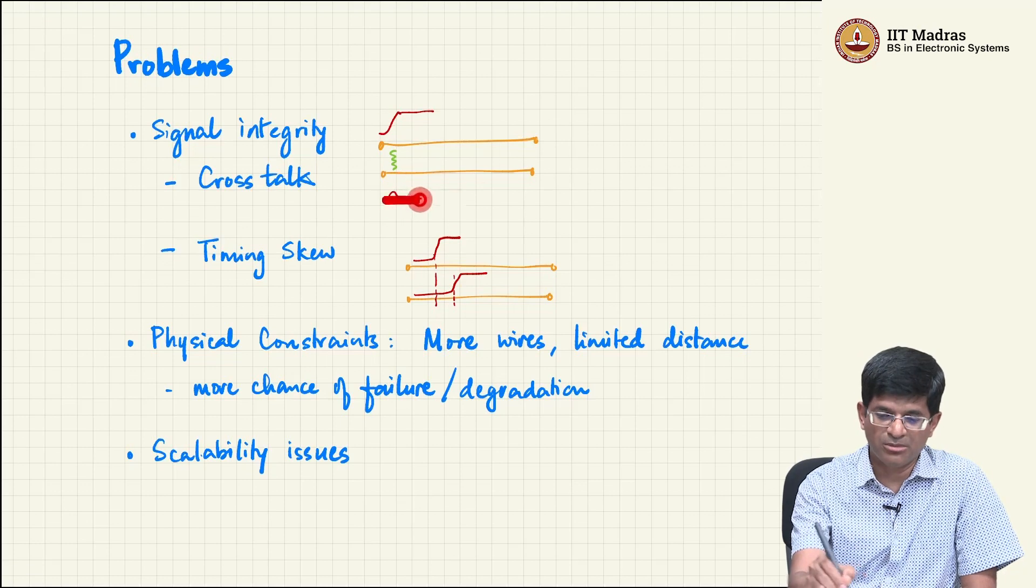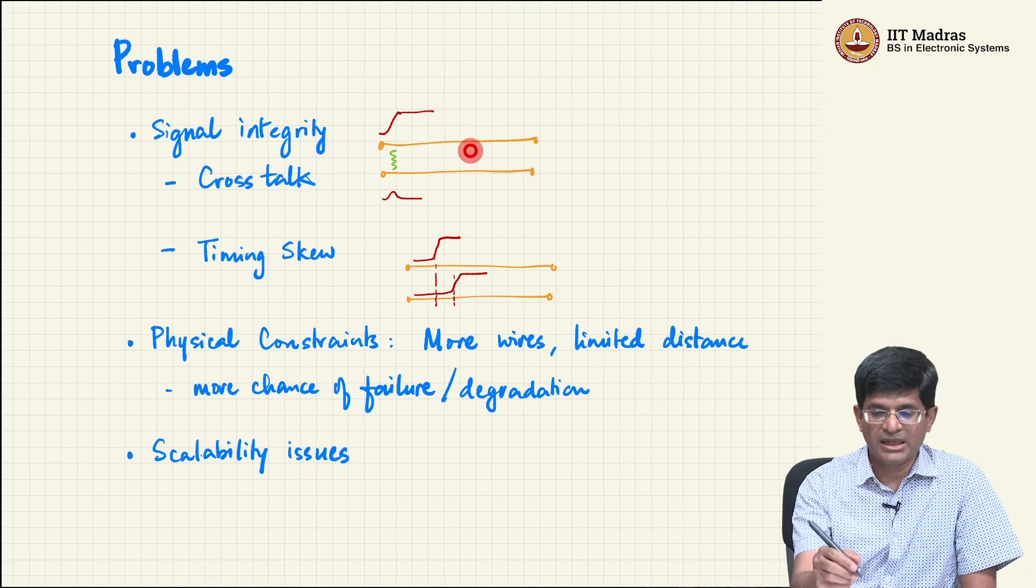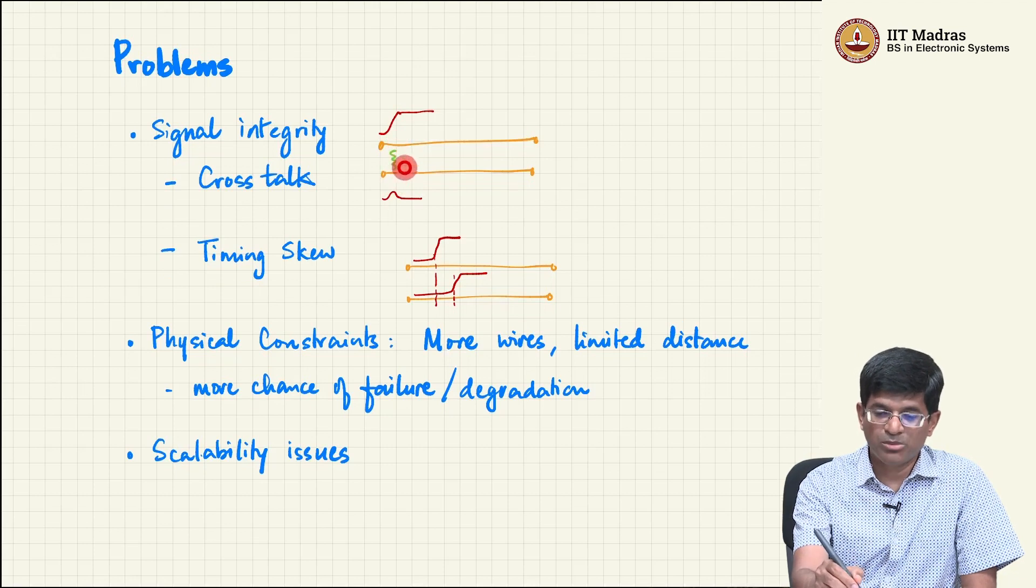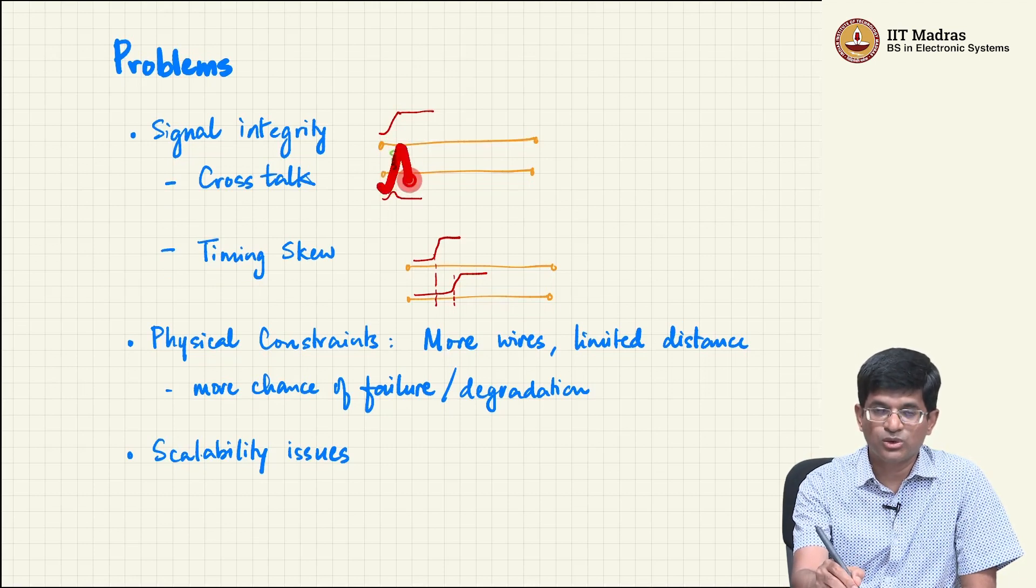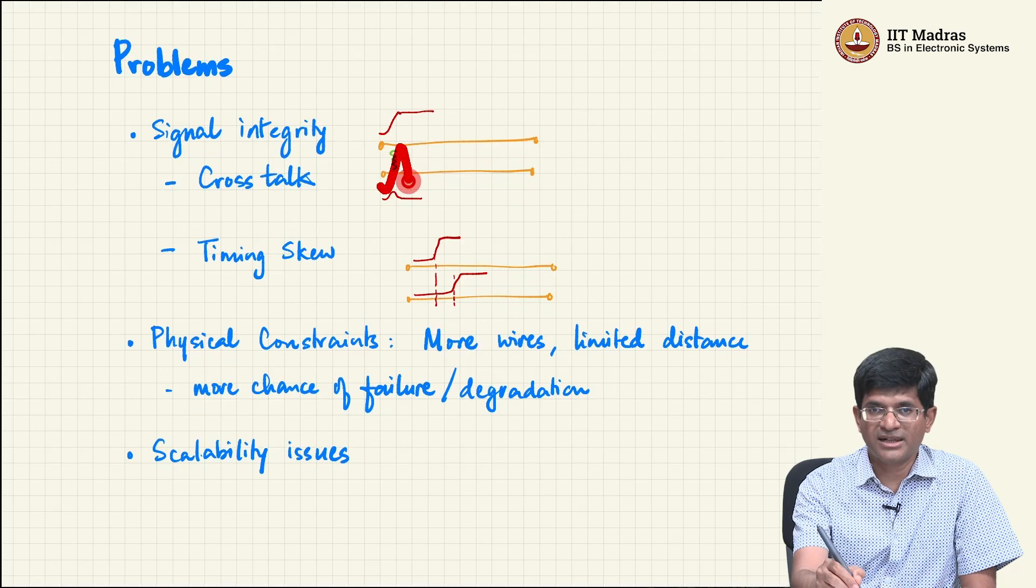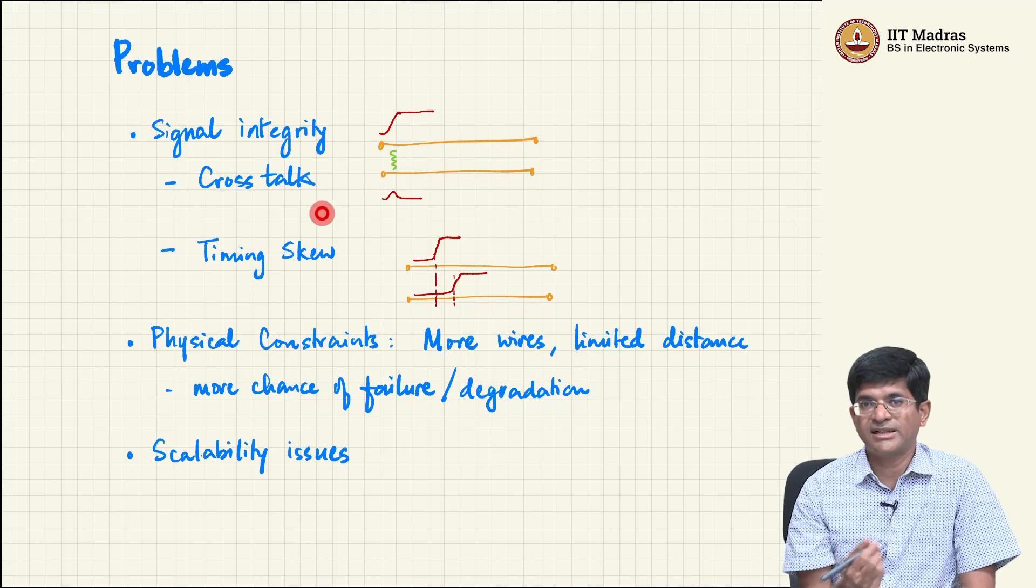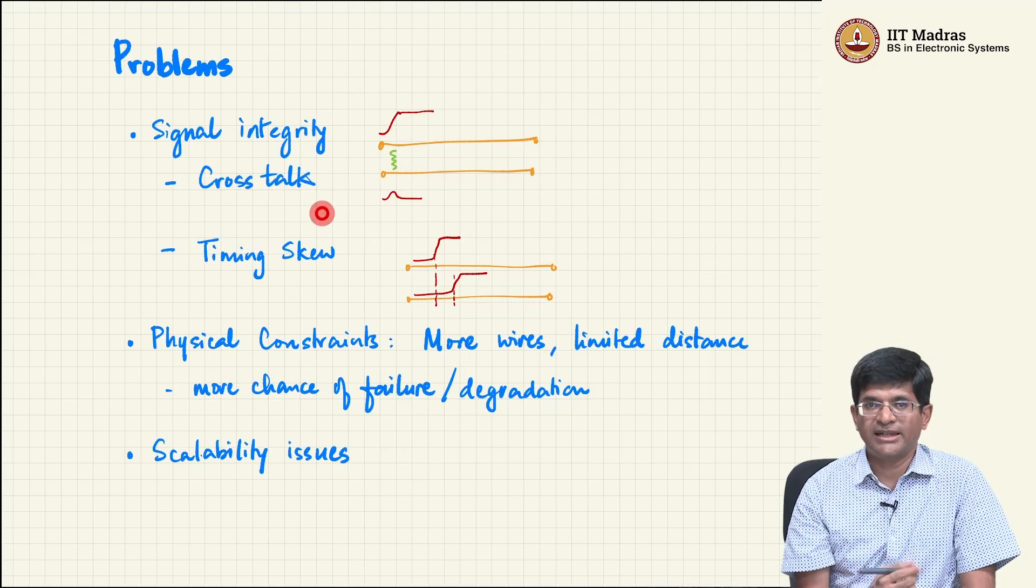Just imagine that there are multiple such wires on either side of this and they all glitch at the same or they all switch at the same time. It is quite possible that this one glitches to a point where it actually looks like it has transitioned from 0 to 1 even though it was not meant to. So crosstalk can be a very serious problem especially at high data rates.